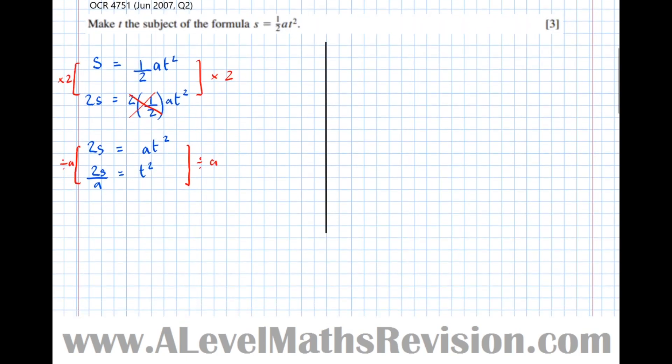I'm almost there, and we're about to encounter a really common problem when students are rearranging formulae at A-level. Now I've got T squared. To undo that squaring, I'm going to square root both sides. However, that's not quite correct, because the opposite of squaring isn't just square rooting, it's plus or minus square rooting, because it can have a negative answer as well. For example, if x² = 9, x equals 3 is definitely a solution, but also minus 3 is a solution because minus 3 times minus 3 is 9. So the answer is plus or minus 3.